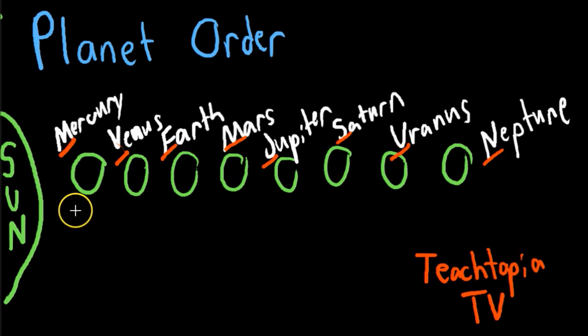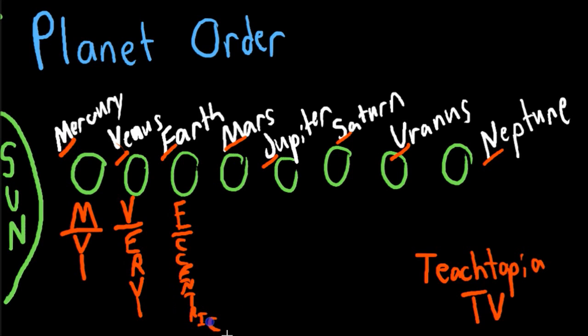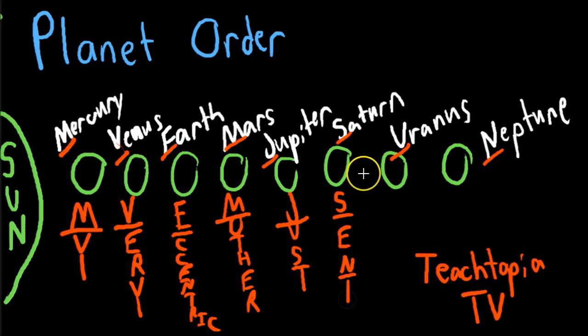So for Mercury, here at Teachtopia TV, we use my, and of course the M is right here. Then we have very, then we have eccentric, that's a fancy word. My very eccentric mother just sent us necklaces.